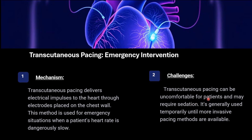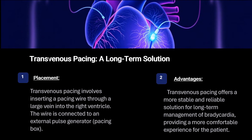The problem with transcutaneous pacing is that it is uncomfortable for the patient and may require sedation. Generally, it can be used temporarily until a more invasive pacing method is available. Transvenous pacing involves inserting a wire through a large vein into the right ventricle, where the wire is connected to an external generator — the pacing box. The advantage of transvenous pacing is that it is a more stable and reliable solution for long-term use, providing a more comfortable experience for the patient while managing bradycardia or until shifting to a permanent pacemaker.